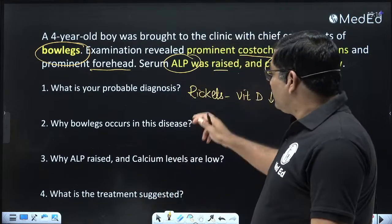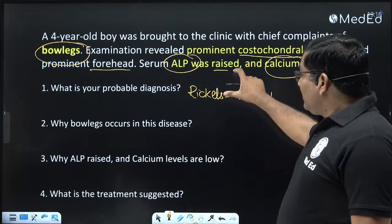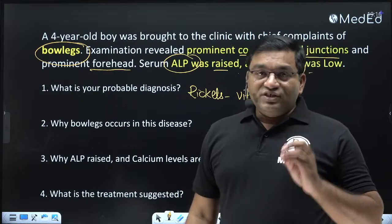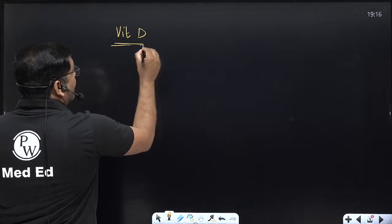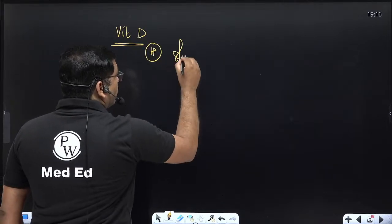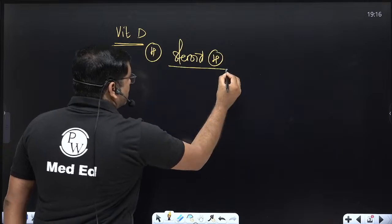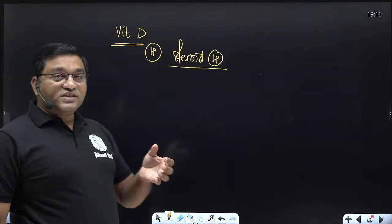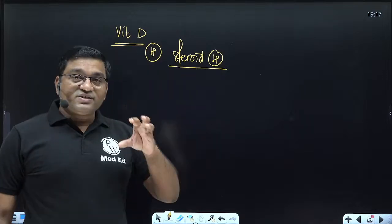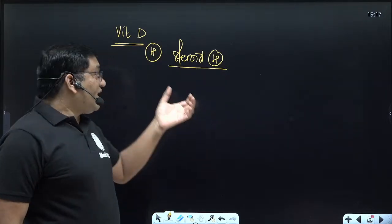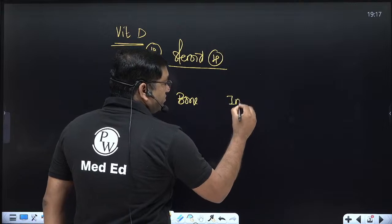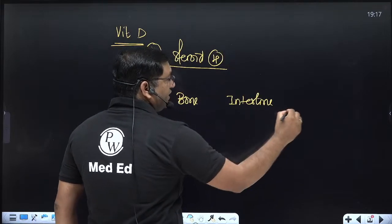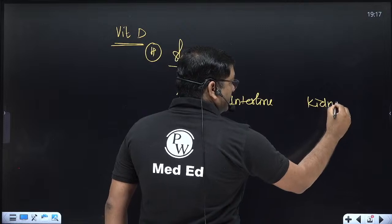There is bone deformity in rickets because of calcium deficiency. Vitamin D is required for regulation of calcium level. Vitamin D has three target organs. It acts like a steroid hormone, binding with intracytoplasmic receptors — intracellular receptors present in the cytoplasm.